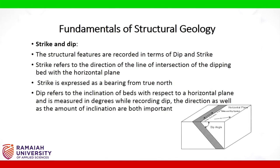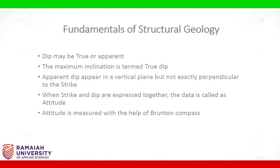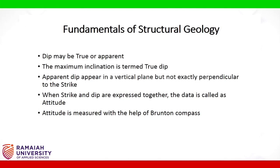Strike and dip: the structural features are recorded in terms of dip and strike. Strike refers to the direction of the line of intersection of the dipping bed with the horizontal plane, expressed as a bearing from true north. Dip refers to the inclination of beds with respect to a horizontal plane, measured in degrees. Both the direction and the amount of inclination are important. Dip may be true or apparent; the maximum inclination is termed true dip. Apparent dip appears in a vertical plane but not exactly perpendicular to the strike. When strike and dip are expressed together, the data is called attitude.